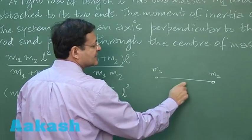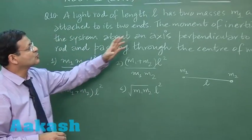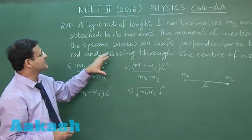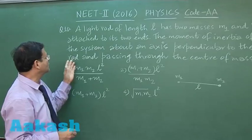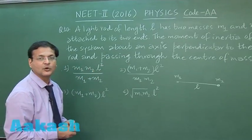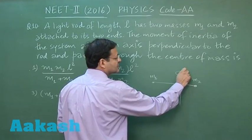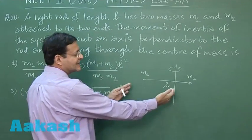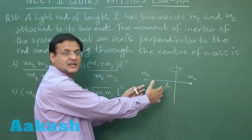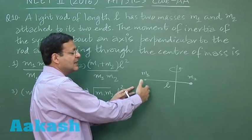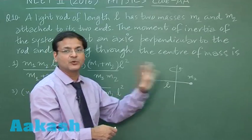Mass of the rod is negligible and length L is given to you. Now they are asking you to calculate the moment of inertia of the system about an axis perpendicular to the rod and passing through the center of mass. So if you go by the conventional method of doing this question, you will have to first find out the center of mass of this, and then you have to take the distance of these 2 masses from this center of mass, then you use the expression M1 X1 square plus M2 X2 square.